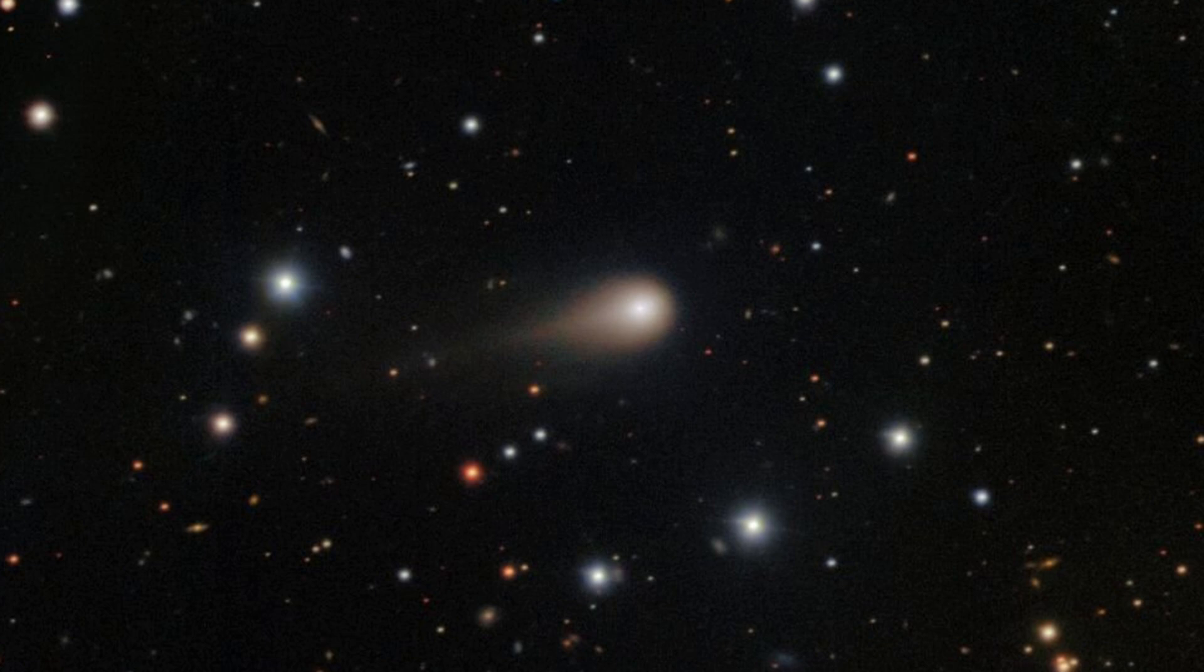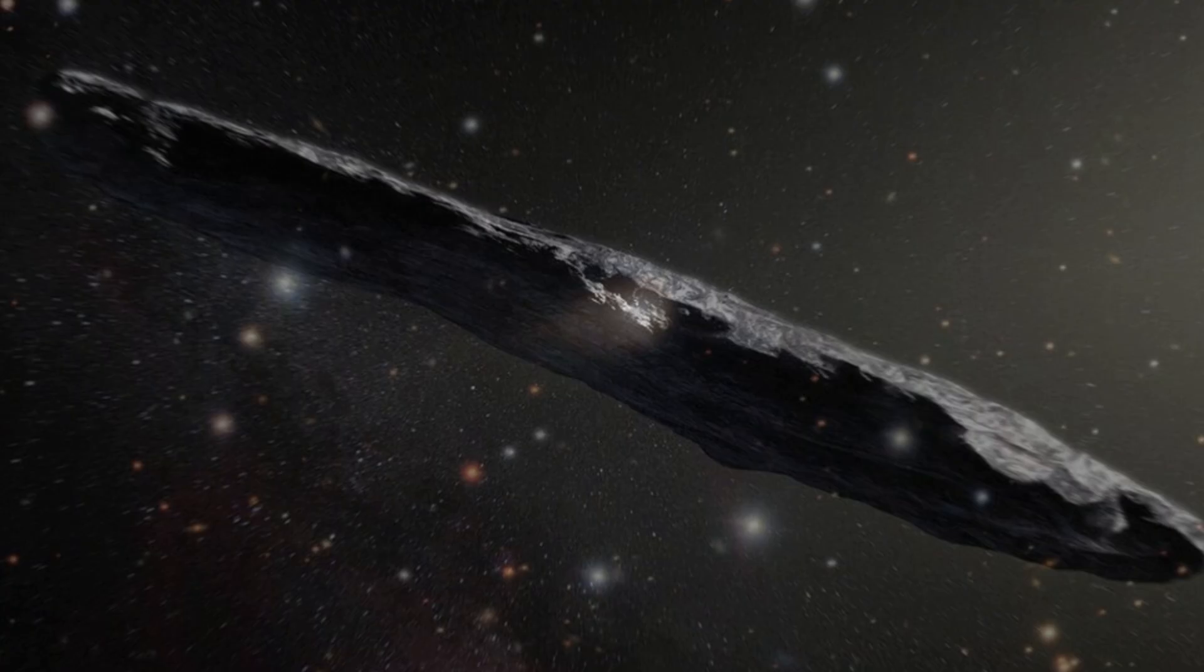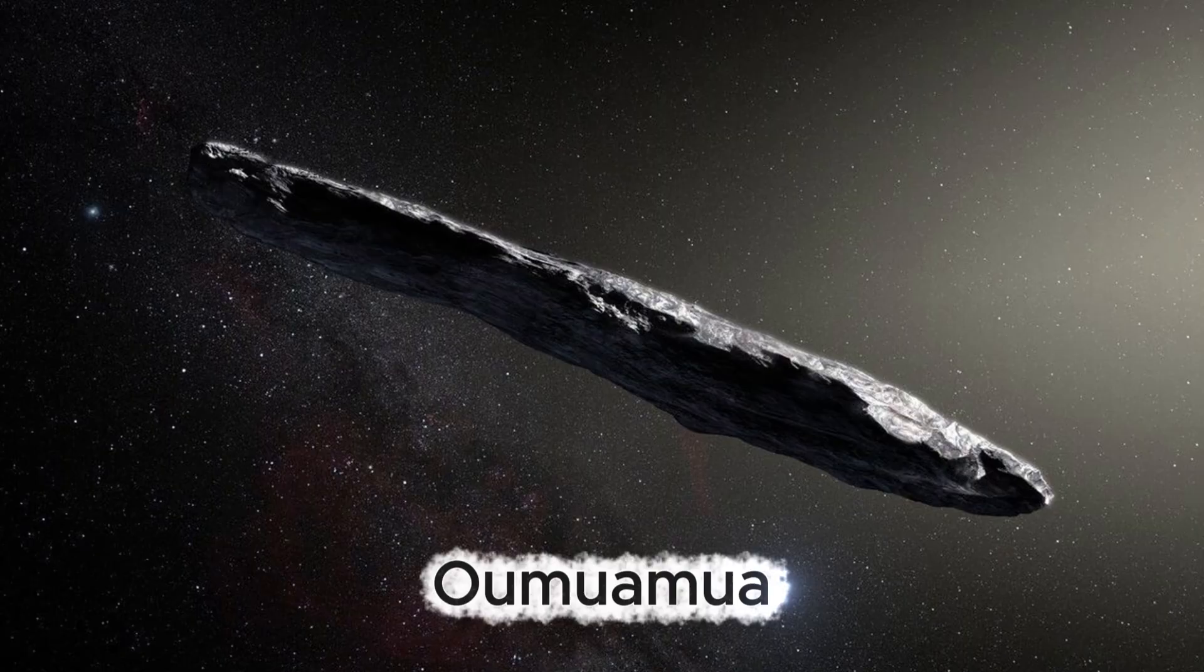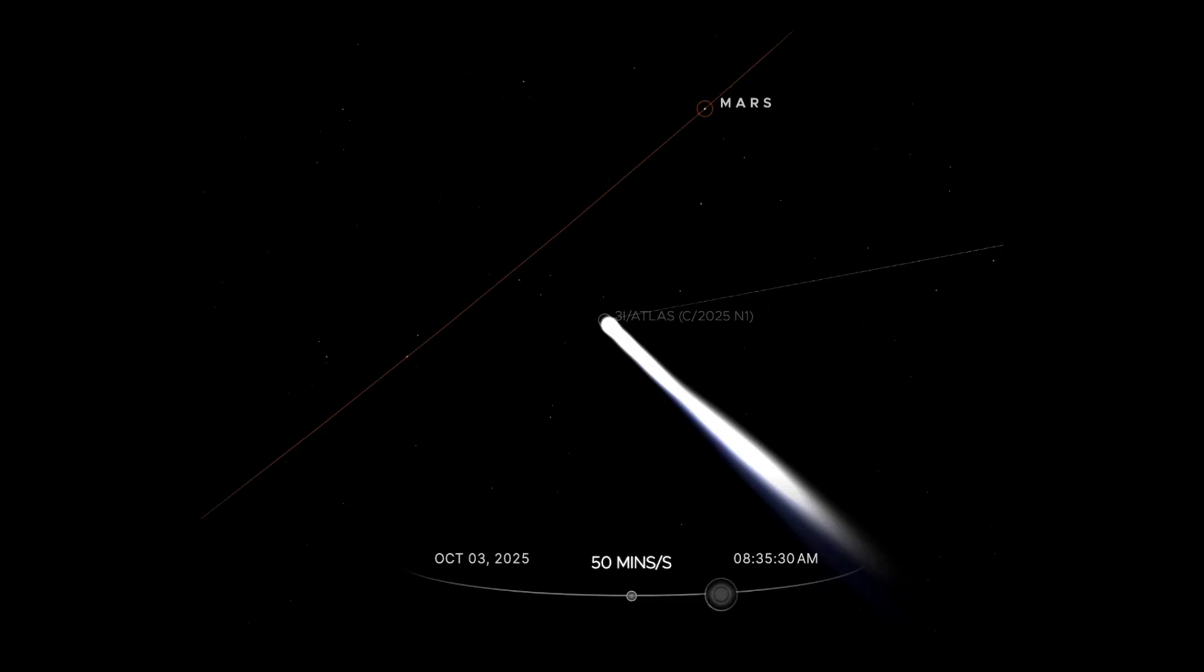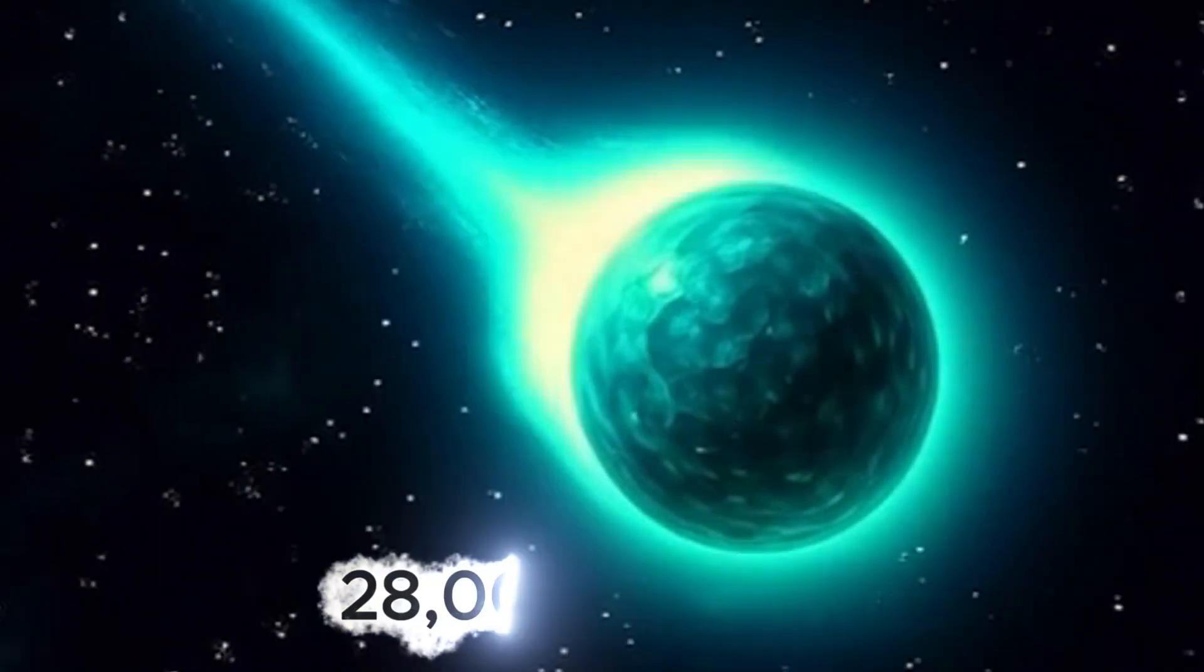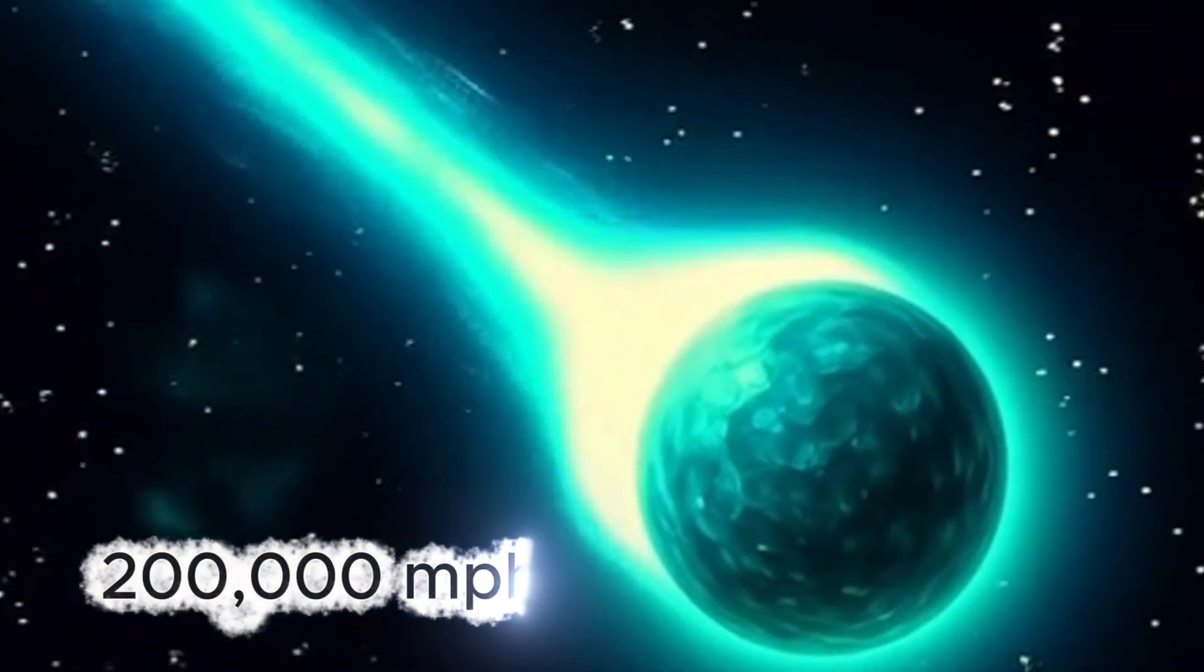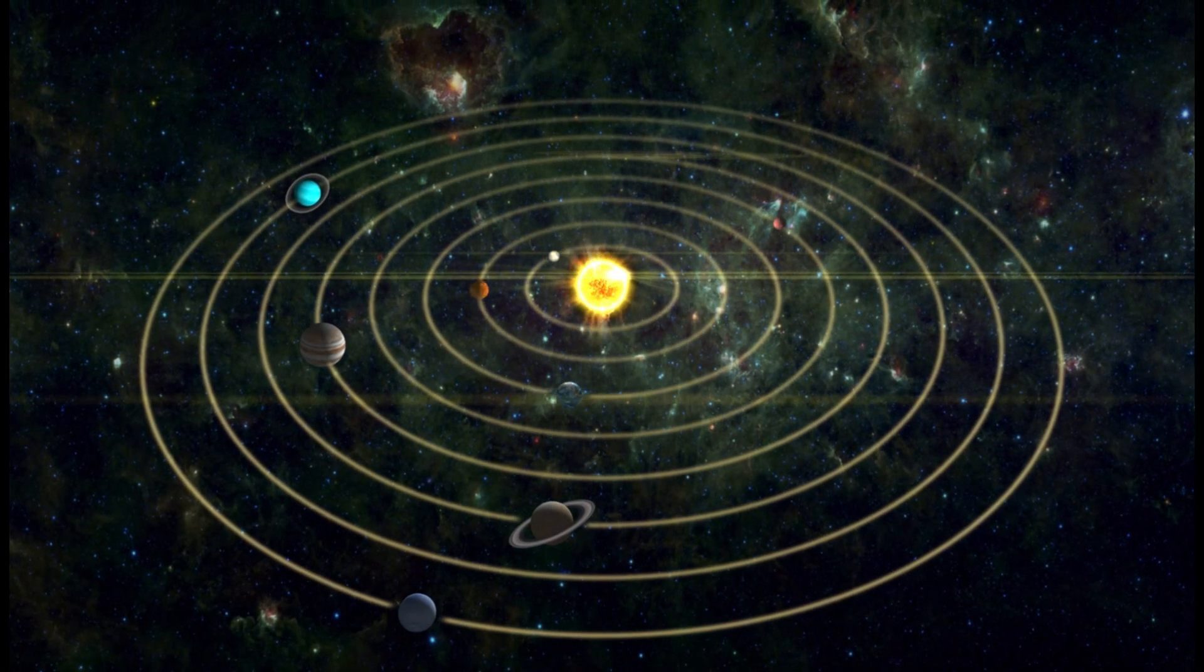Other unverified images from ground-based and orbital telescopes suggest that the object might have an elongated form, bearing a closer resemblance to the first known interstellar object, Oumuamua, rather than to the second, 2i Borisov. On October 3rd, the enigmatic body made its closest recorded pass near Mars, approaching to within roughly 0.19 astronomical units, or about 28 million kilometers. Now it is hurtling through space at an astonishing 200,000 miles per hour, heading toward its nearest approach to the Sun, a point known as the perihelion.